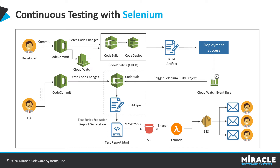Once the deployment is successful, we have a CloudWatch event rule configured. This rule is set up so that whenever the deployment is successful, it will automatically trigger a Selenium build. This Selenium CodeBuild project has a build specification document with a list of commands: to install dependencies, run test scripts, generate reports, etc. Since this is a Selenium CodeBuild project, it will install dependencies like Java, Maven, TestNG, and ChromeDriver.